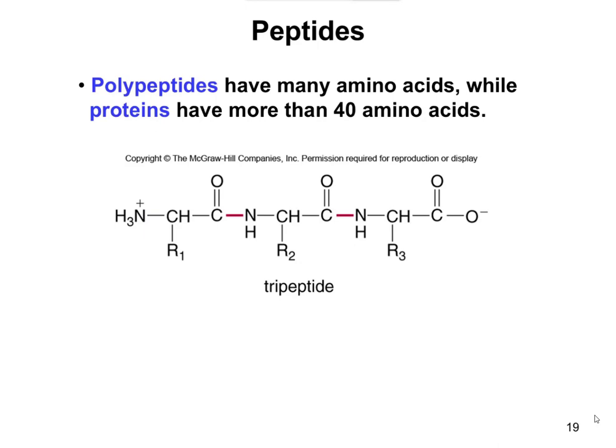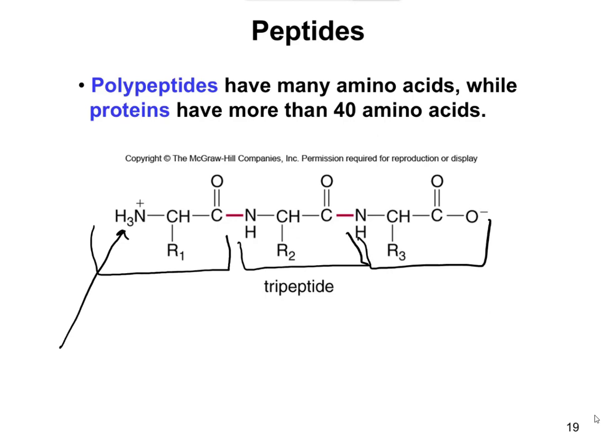Polypeptides have many amino acids; proteins have more than 40. Here's an example of a tripeptide. If you're looking and trying to break this down into individual pieces, there's one, two, and three. The repeating unit for your amino acid is NH3+ CH with an R group, C double bond O — then NHCH with an R group, C double bond O — then NHCH with an R group, C double bond O. On the ends of your peptides, you're going to have the amine group.